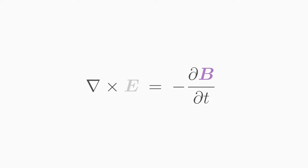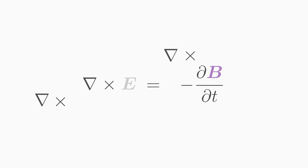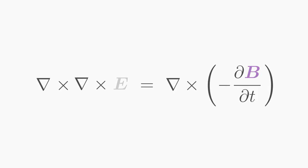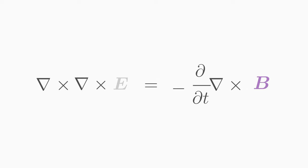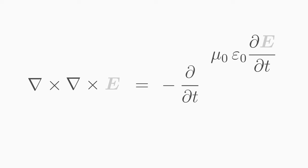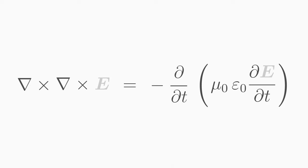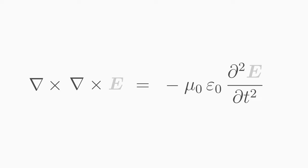Let us take Maxwell's equation for the curl of the E field and decouple it. To do this, we apply the cross product with the nabla operator on both sides of the equation. Now we can insert the fourth Maxwell equation — the curl of the B field. We may place the time derivative in front of the two constants and combine it with the other time derivative to get the second derivative.